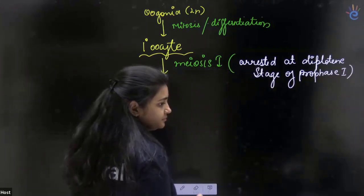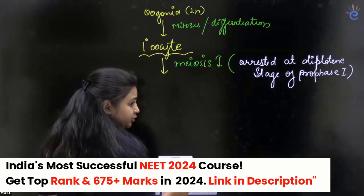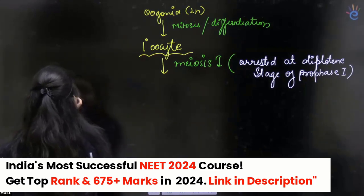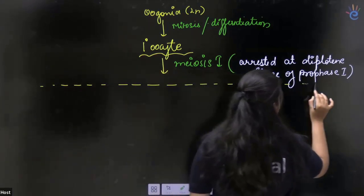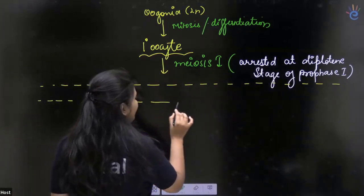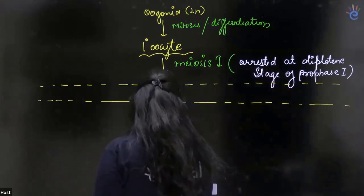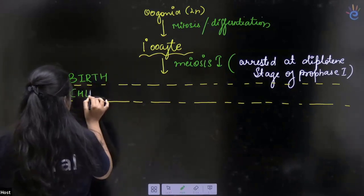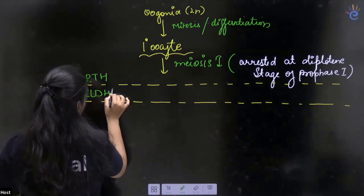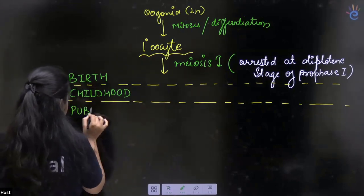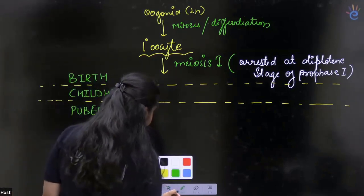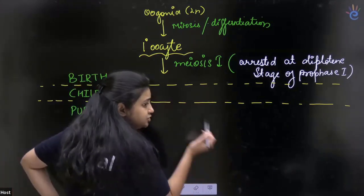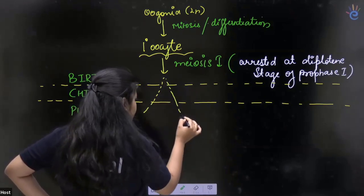Okay, I will give you time for the diagram. Meiosis 1 - what happened? From birth to puberty, it's arrested. When puberty came and the menstrual cycle begins, then meiosis 1 completes.